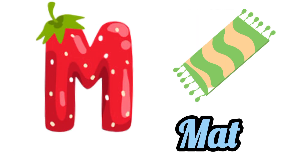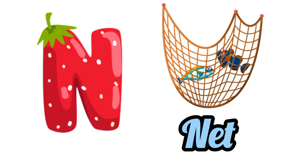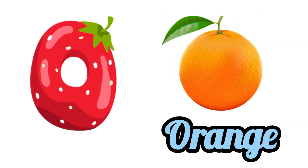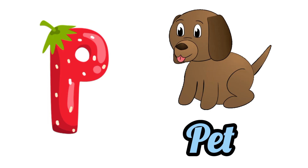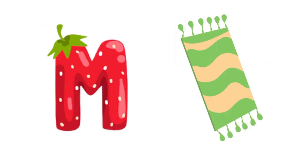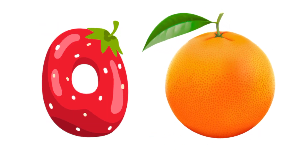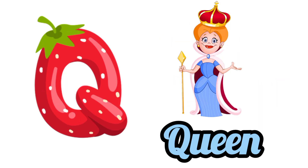M is for Mat. N is for Net. O is for Orange. P is for Pet.